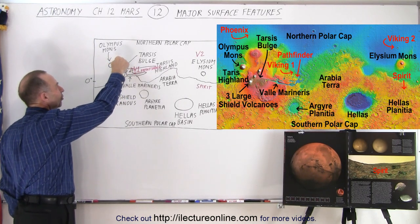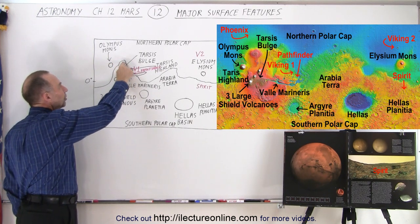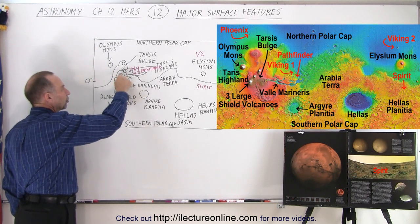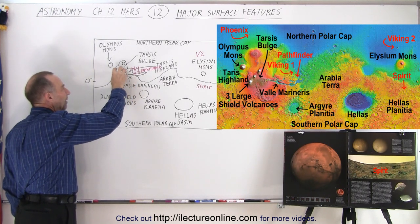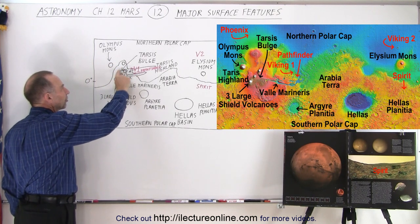Then at the very tip of the Tarsus Bulge, or Tarsus region right here, the highland, there's another large volcano right there. And right there where those three large shield volcanoes are, this is where we have the highest region of the planet, and this is known as the Tarsus Highland.